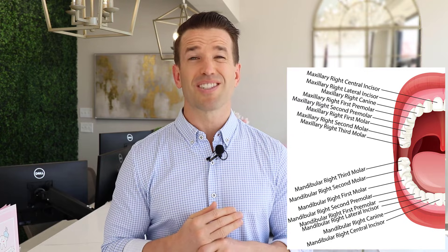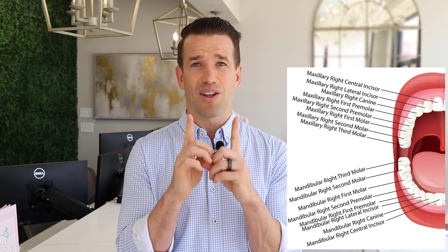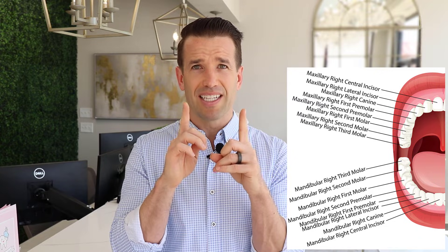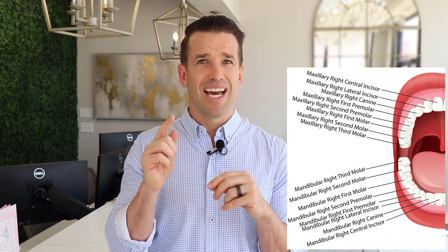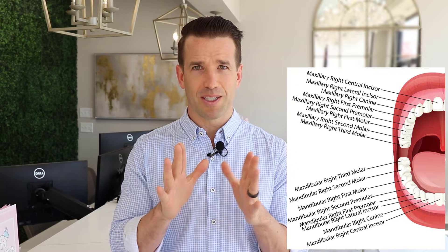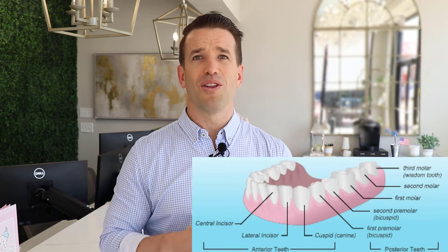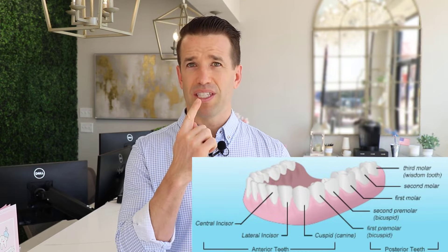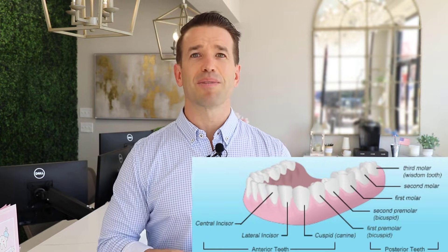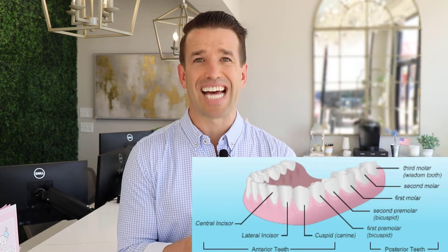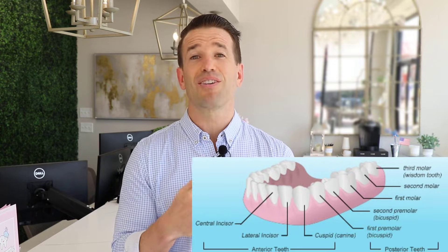Let's go over what the teeth are called again. The two front teeth are what we call centrals. The ones right beside that are called laterals. The ones behind that are called canines. The ones behind that, we have two premolars — the first and second premolar — and then you have three molars. Sometimes you group the front four teeth together and call them incisors, so centrals and laterals can be referred to as incisors.